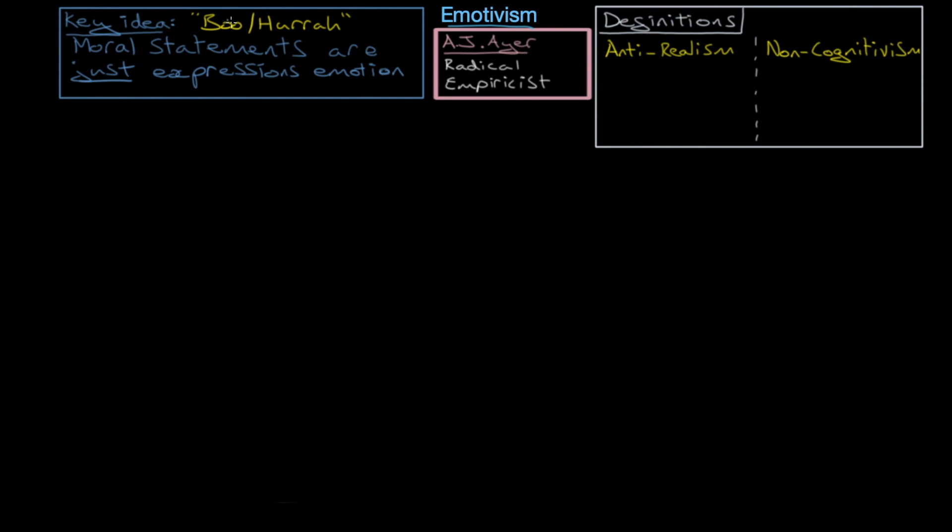The idea being that either we say boo when we think something is wrong or hurrah when we think something is good. So, emotivism is inspired by A.J. Ayer's radical empiricism. He believes, as empiricists do,